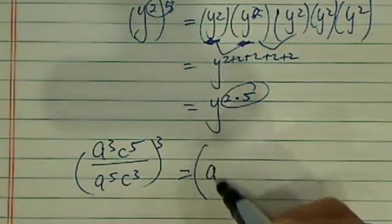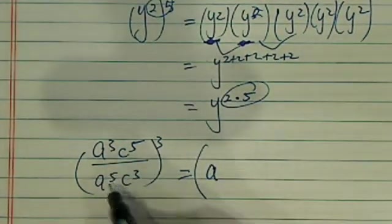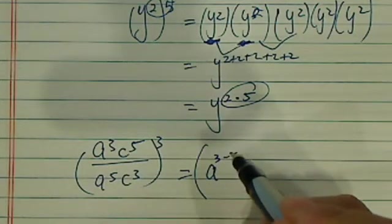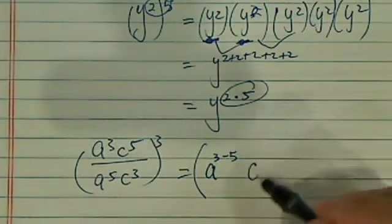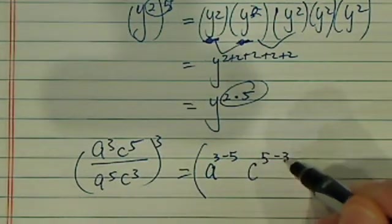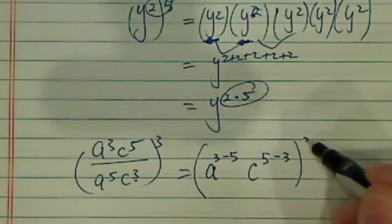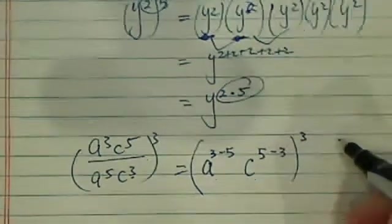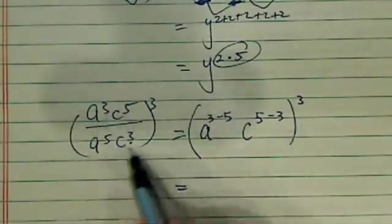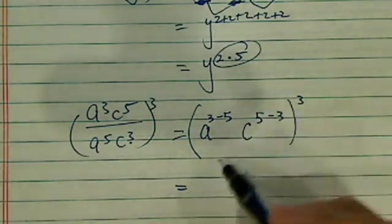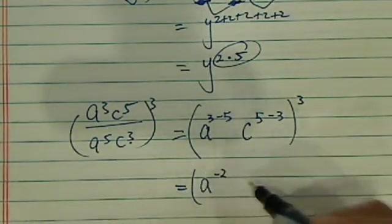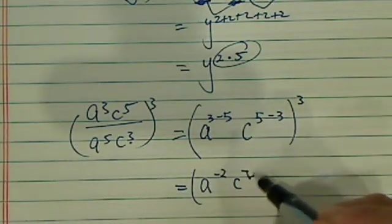So let's take a look: a to the three divided by a to the five gives a to the 3 minus 5, and c to the five divided by c to the three gives c to the 5 minus 3, with the whole thing to the third. This way you simplify the four terms down to two. Here you have a to the minus two and c to the two.